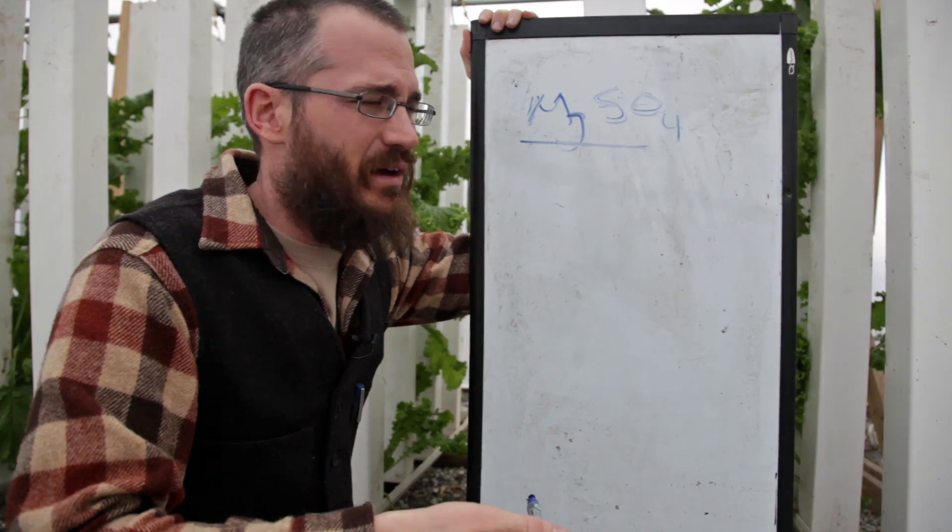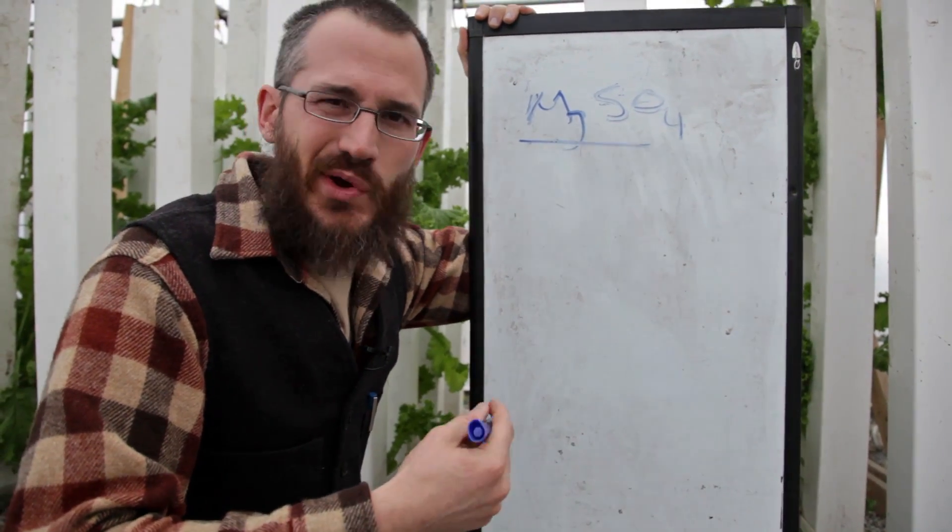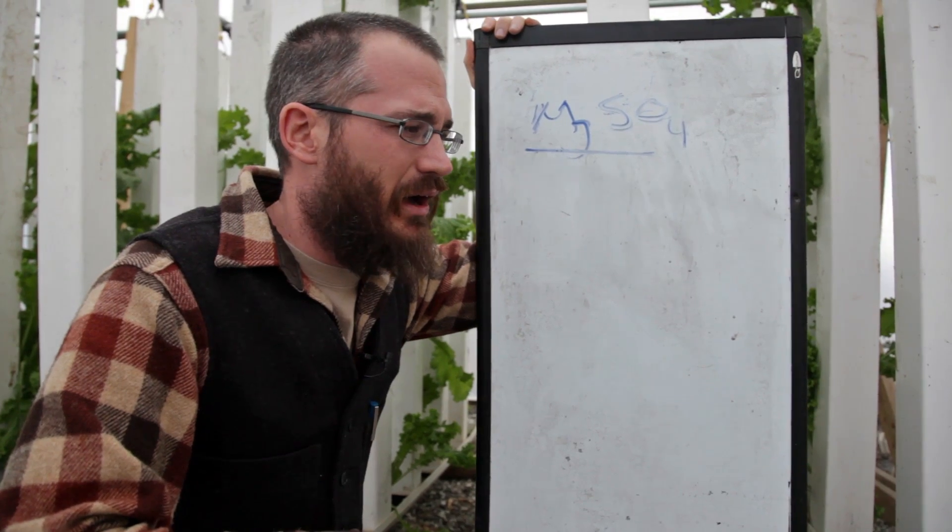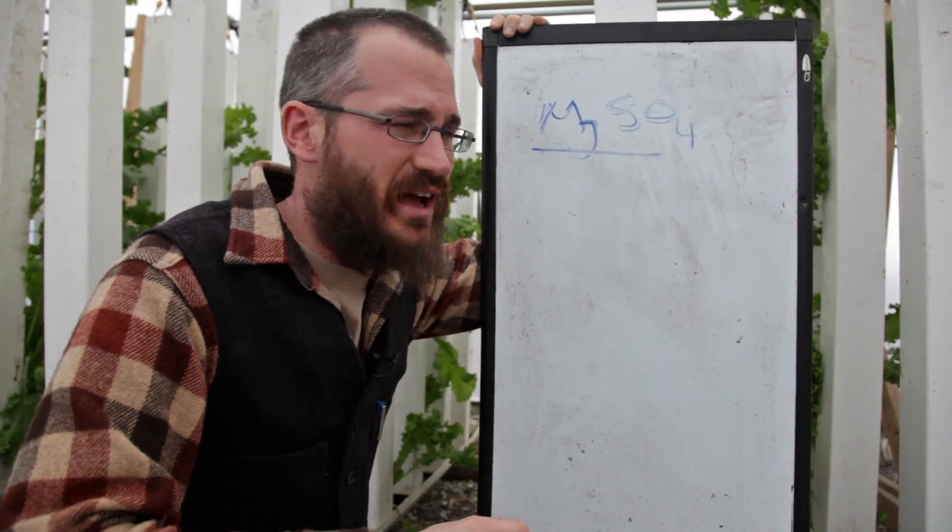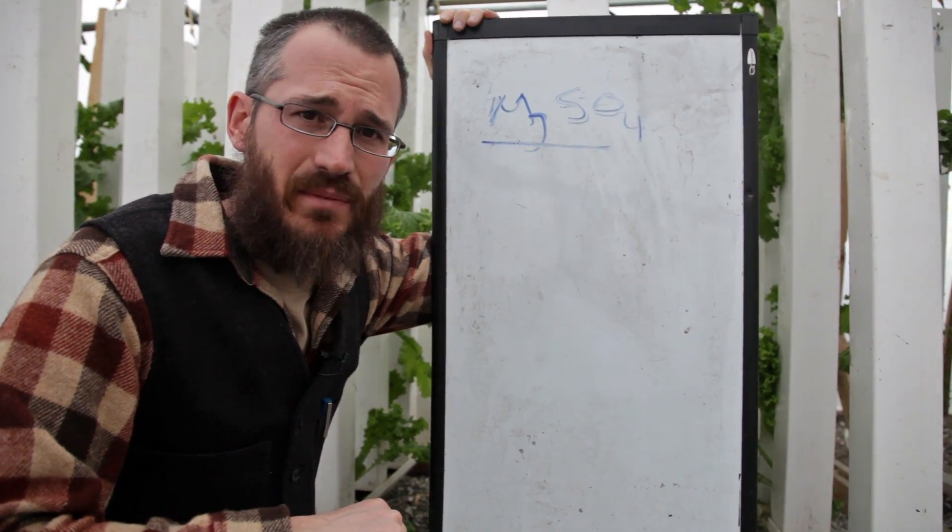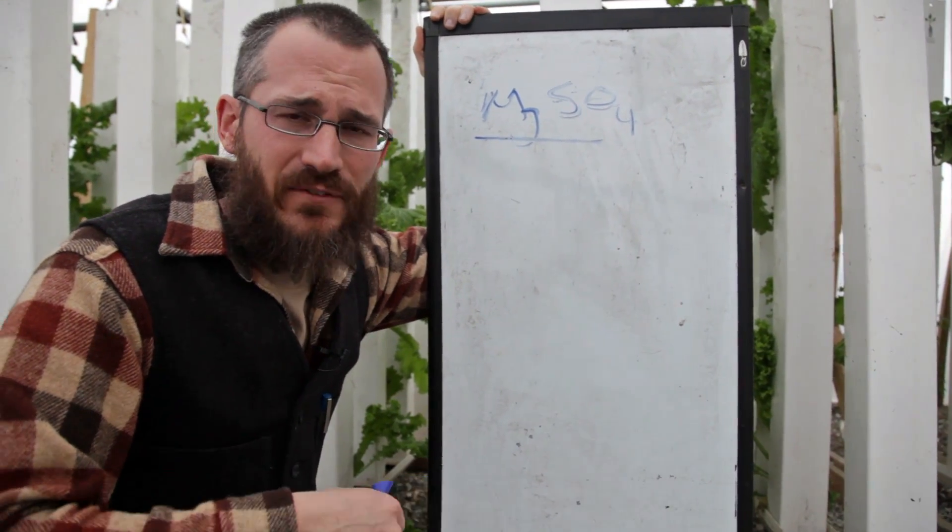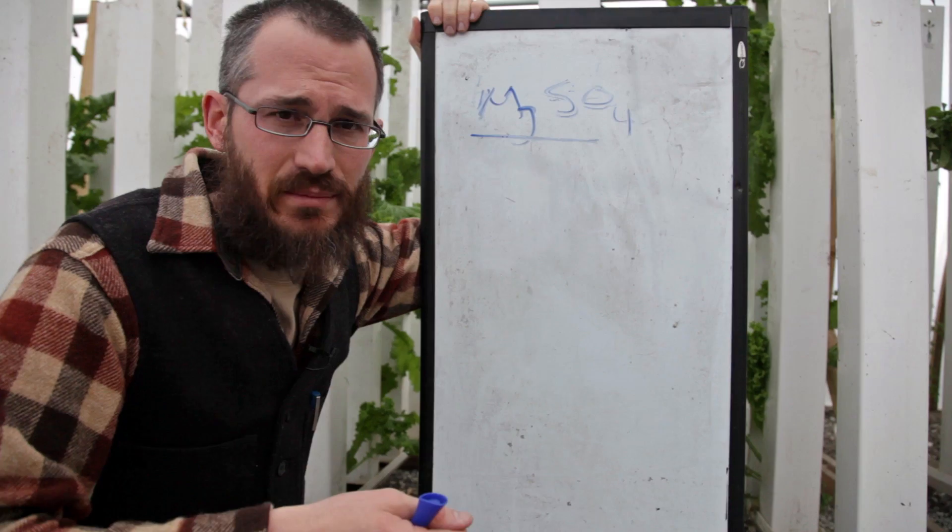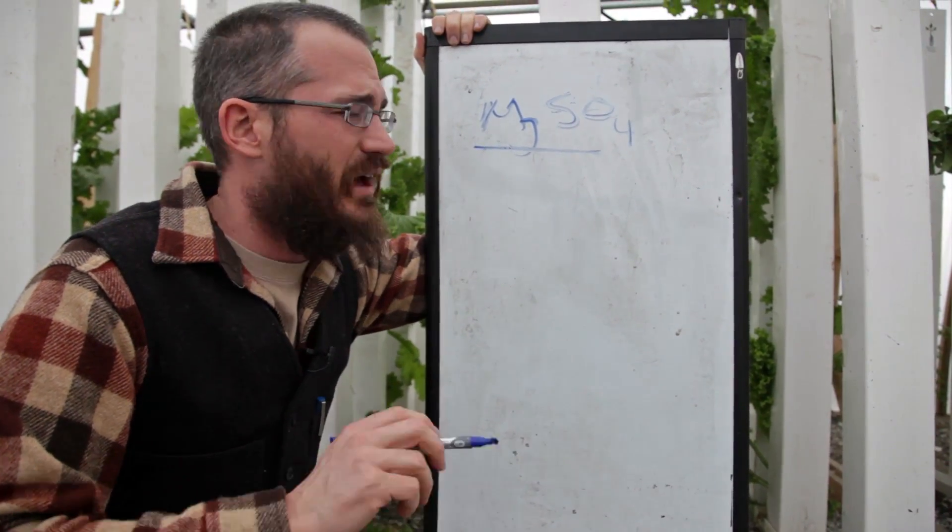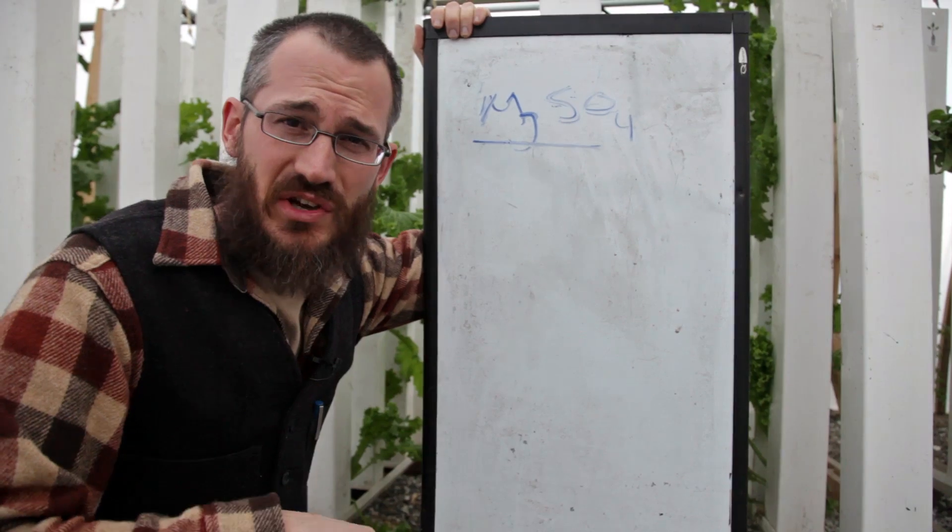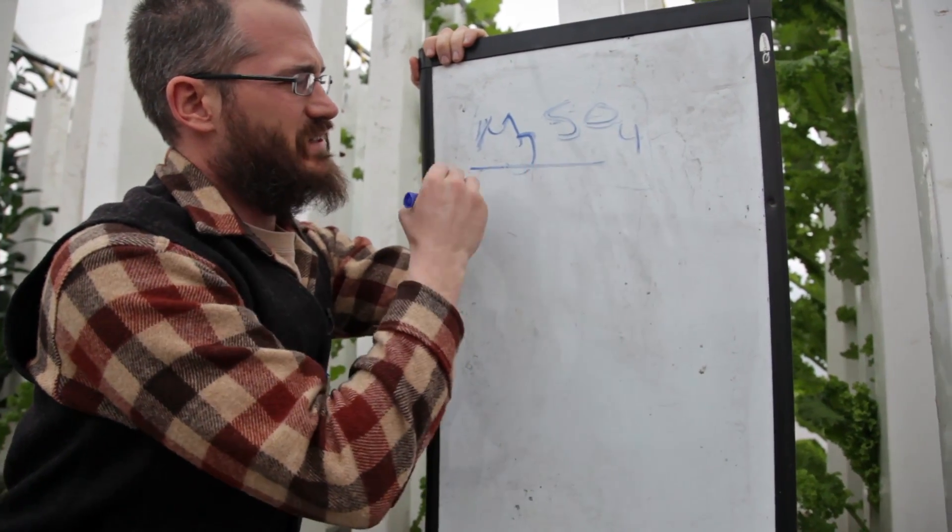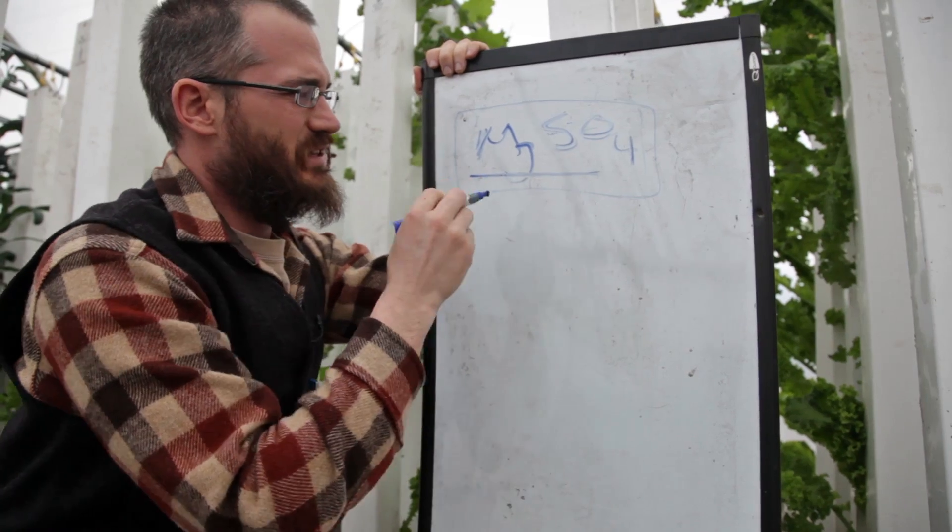But you can add Epsom salt relatively, you can add actually quite a bit of it. It's not going to harm your system typically. It's pretty benign stuff. Now, you don't want to go and just dump a whole box of Epsom salt into your system, but you can certainly add a few ounces for larger systems and continue to treat until you actually see that magnesium deficiency start to go away. So that's the best way to take care of it in systems where your pH is rather high.